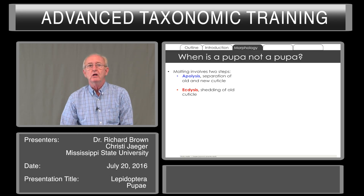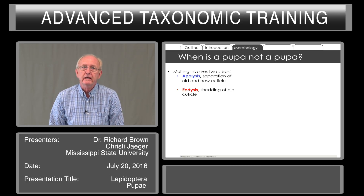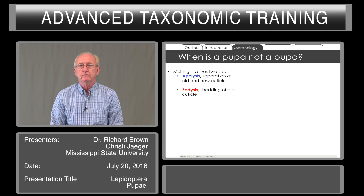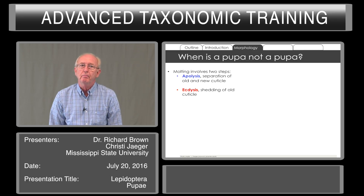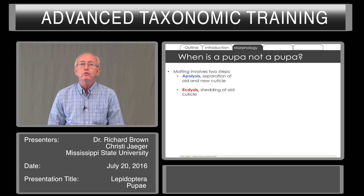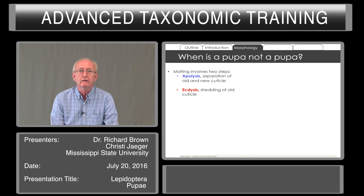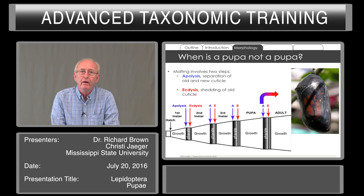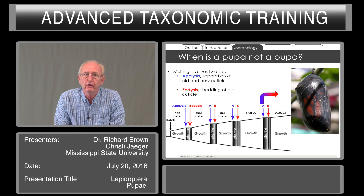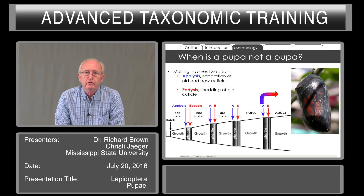So when is a pupa not a pupa? When an insect molts, there are two steps. The first is called apolysis, which involves separation of the two cuticles. And then you have ecdysis, in which the old cuticle is shed. This is true for caterpillars and it's true of pupae. What can happen is that you can have one occurring and the other not. You see that in growth stages you have first apolysis — the separation — and then the shedding, the ecdysis.